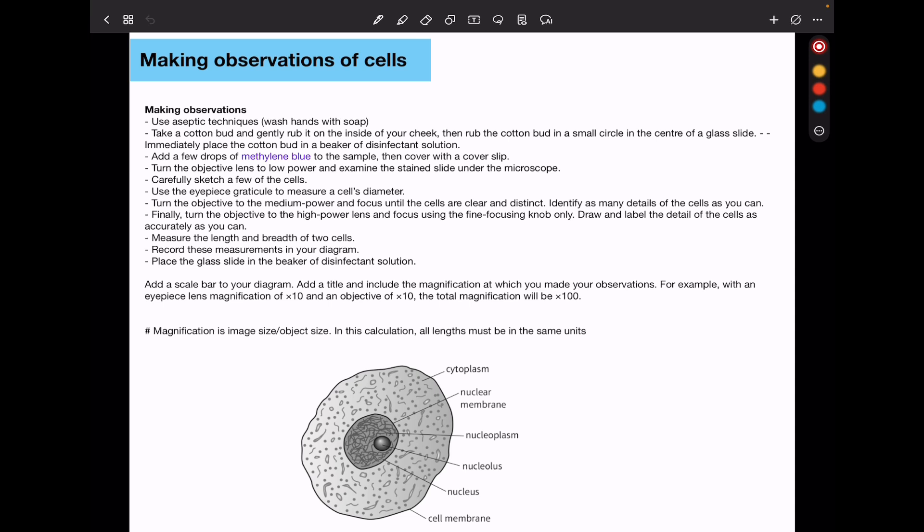And finally, you can turn on to high power and focus using the fine focusing knob. Draw and label the details of the cells as accurately as you can. So you could also measure the length and the breadth of the two cells. Maybe there are two cells you're observing. Recall the measurements in your diagram. Place the glass slide in the beaker of disinfectant solution.